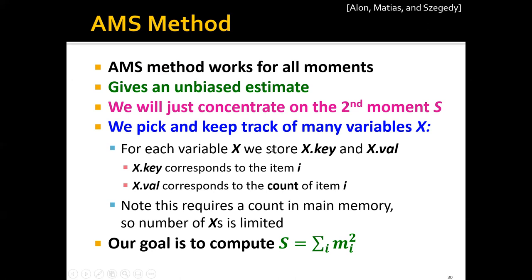In the AMS method, we pick and keep track of many variable sets. For each variable X, we store a key and a value. The key corresponds to the ID of the item — say item i — and the value corresponds to the count of item i, i.e., how many times item i has appeared in the data stream. Note that this requires storing counts in main memory, so the number of accesses is limited. Our goal is to compute the surprise number, the second moment, which is the sum of m_i squared.